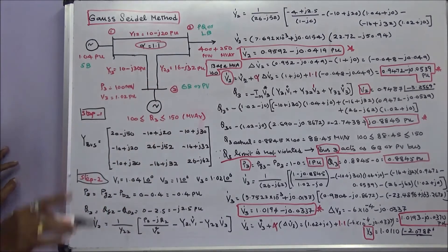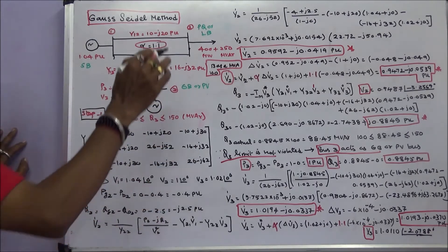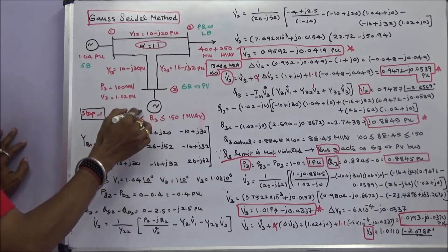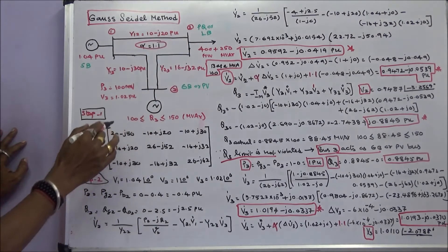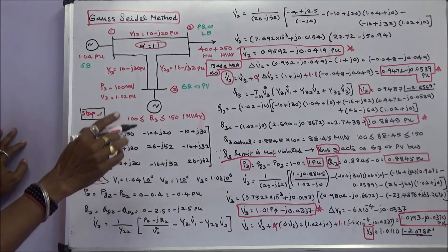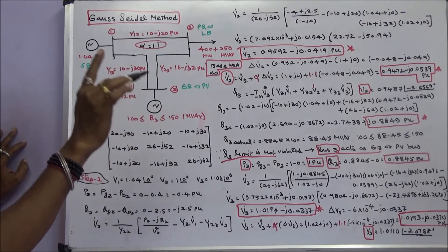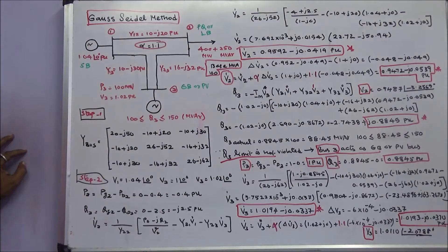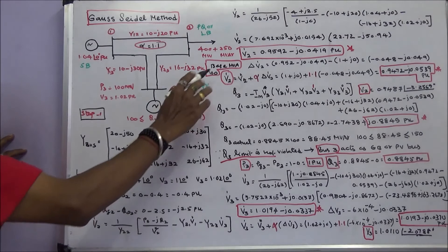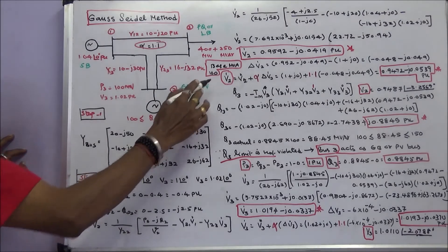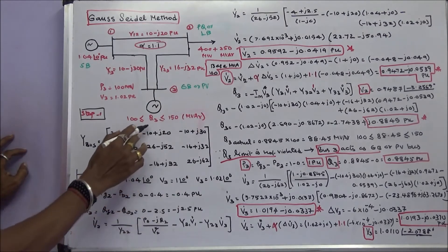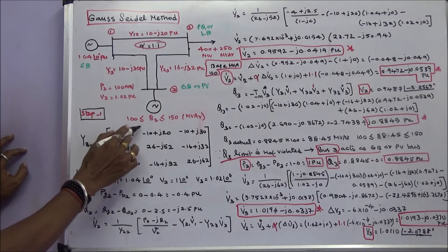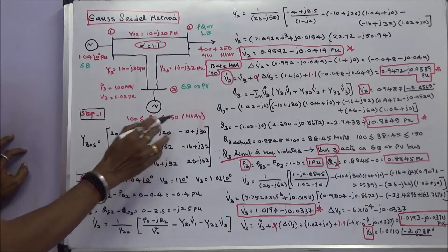The question is to calculate V2, V3, Q3, and the slack bus real and reactive power. The base MVA is 100. In per unit, Q3 minimum is 1 per unit and maximum is 1.5 per unit.